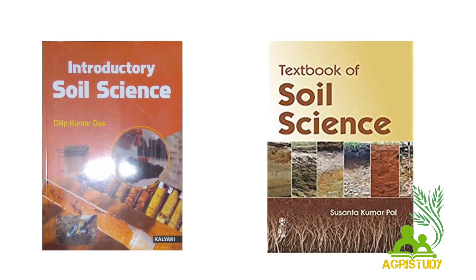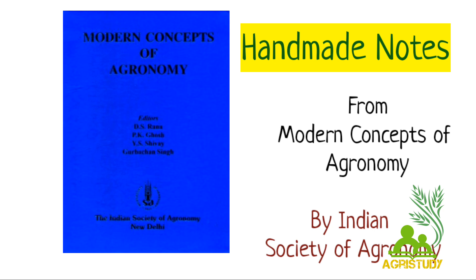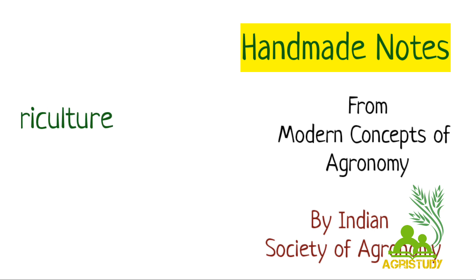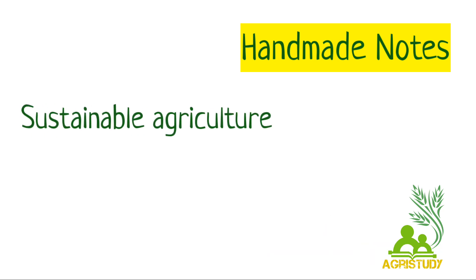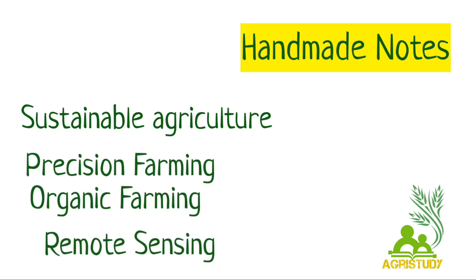One should go through a Soil Science textbook like Introductory Soil Science written by D.K. Das or Textbook of Soil Science written by S.K. Pal. Along with this, Agronomic Terminology published by Indian Society of Agronomy is a very important book. You should make handmade notes from Modern Concepts of Agronomy published by Indian Society of Agronomy on various important topics like Sustainable Agriculture, Conservation Agriculture, Precision Farming, Remote Sensing, Organic Farming, etc.